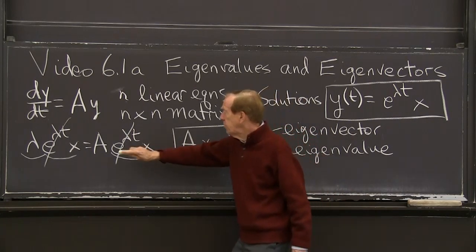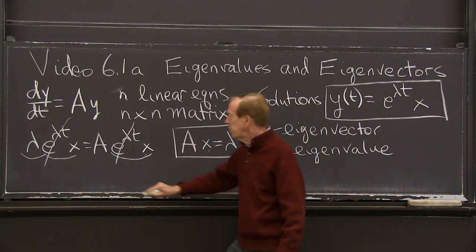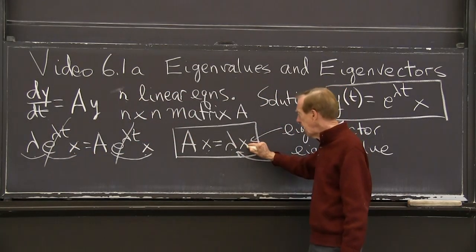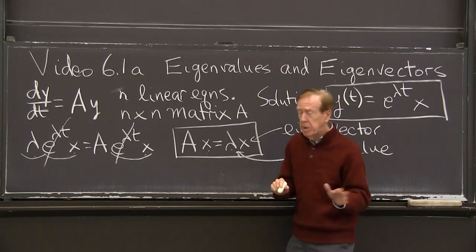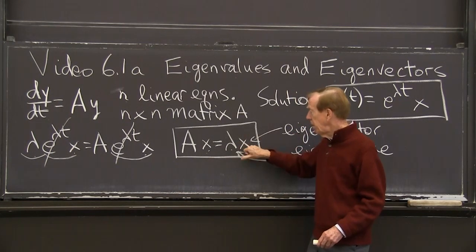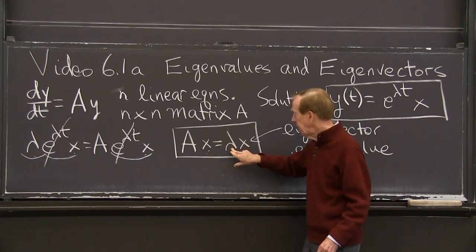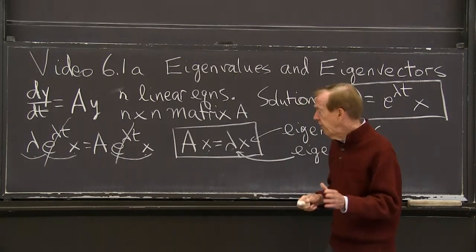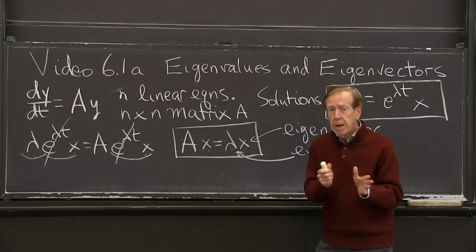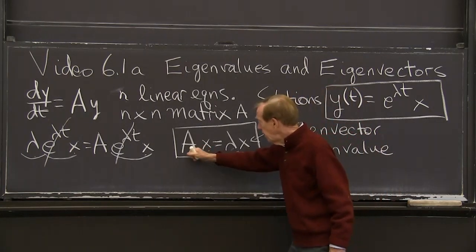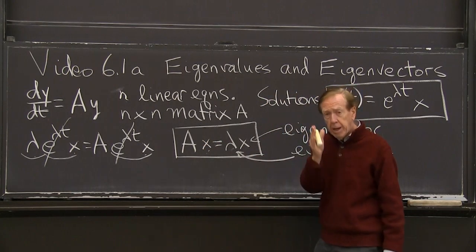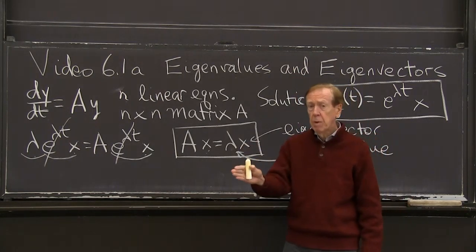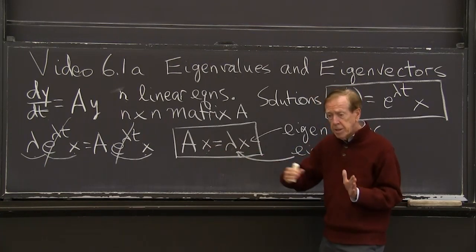Now I cancel e to the lambda t, just the way I was always canceling e to the st. So I cancel e to the lambda t, because it's never zero. And I have the big equation. Ax, the matrix times my eigenvector, is equal to lambda x, the number, the eigenvalue, times the eigenvector. Not linear notice. Two unknowns here that are multiplied: a number, lambda, times a vector x.